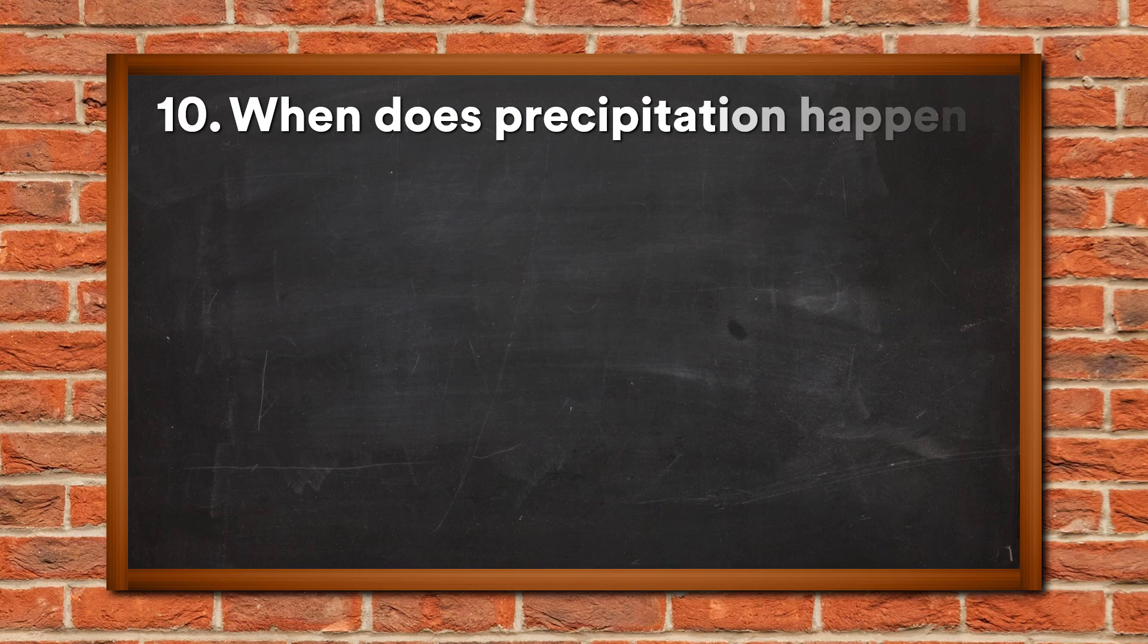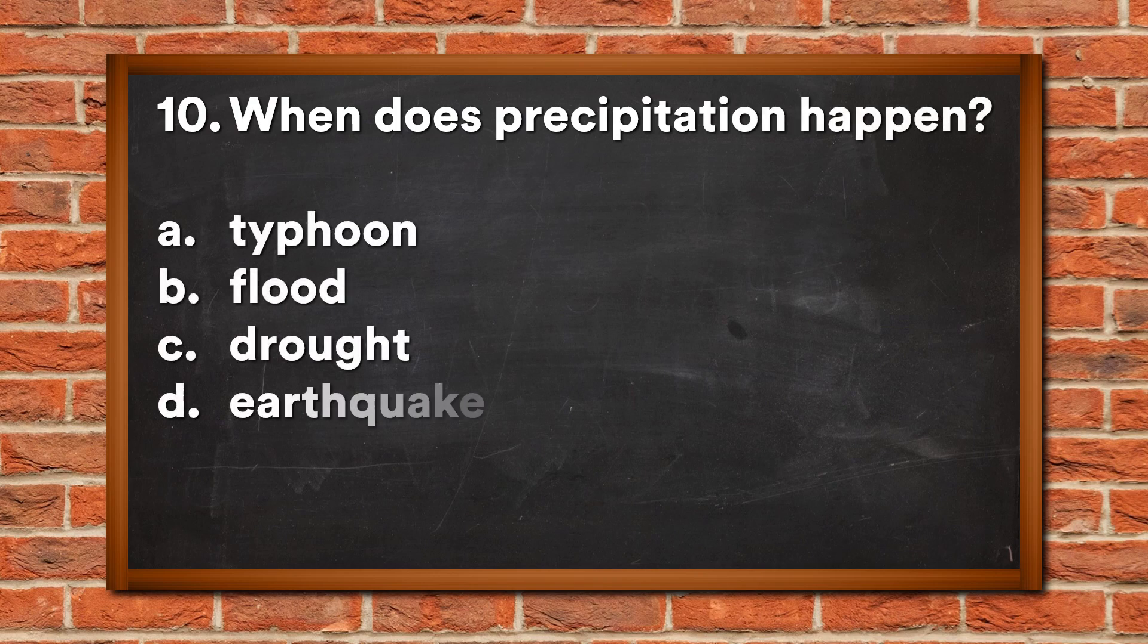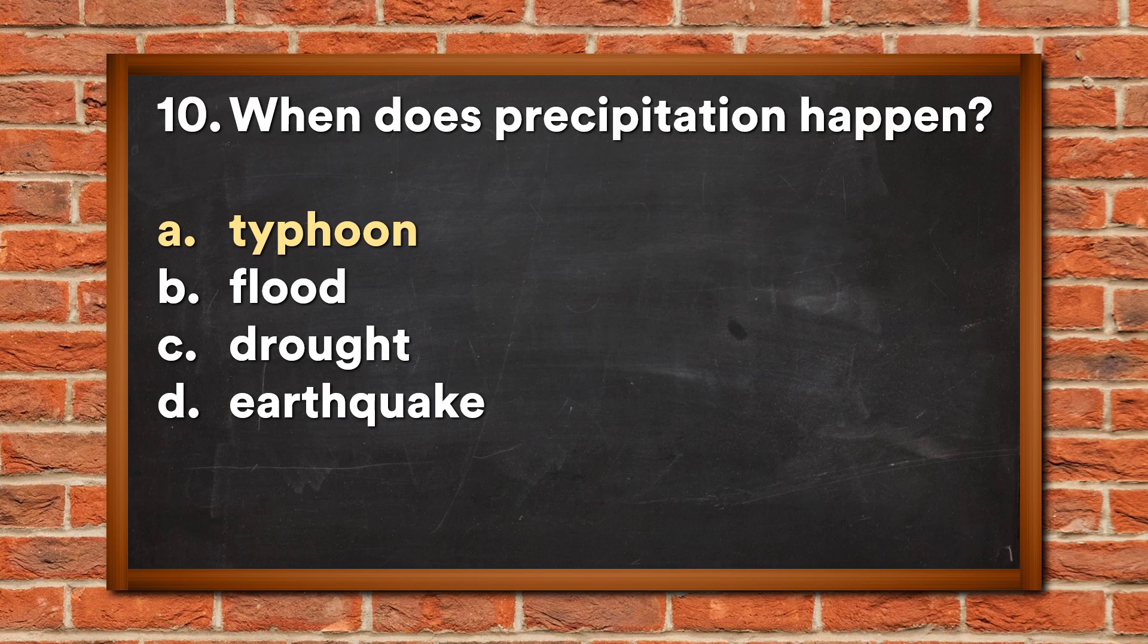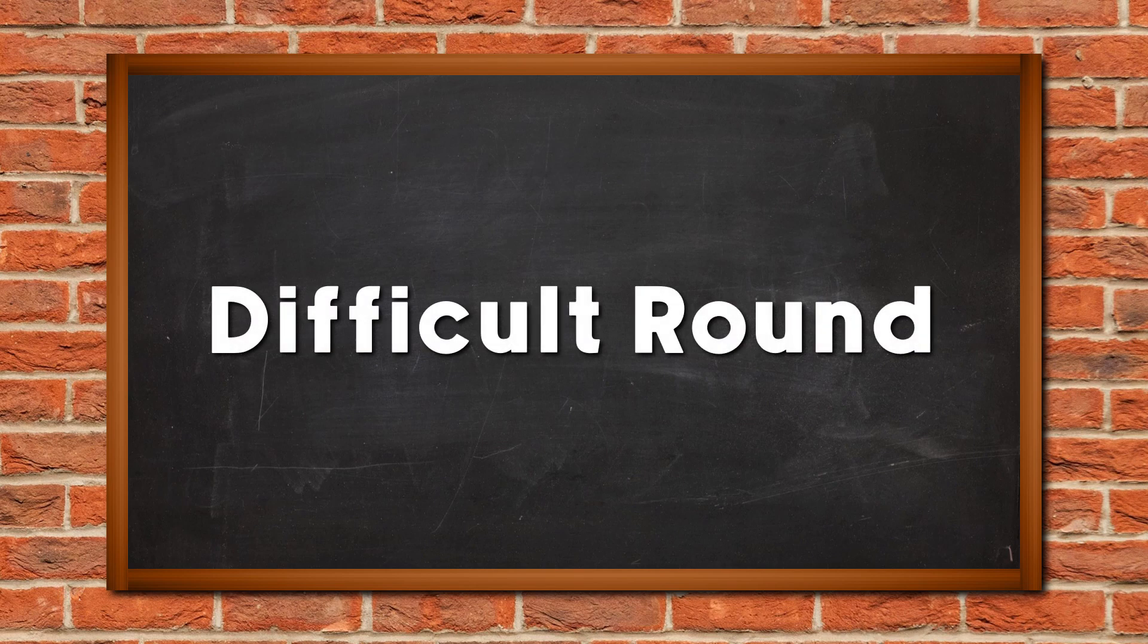Question 10: When does precipitation happen? A. Typhoon, B. Flood, C. Drought, D. Earthquake. The answer is A, Typhoon. Let's now proceed to the difficult round.